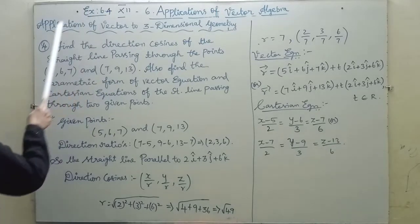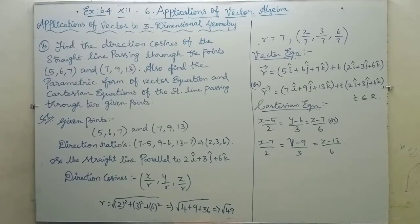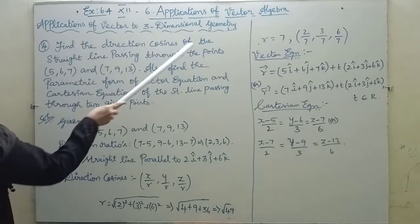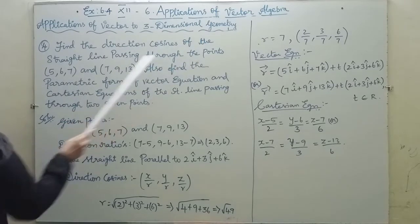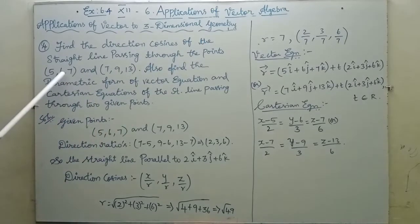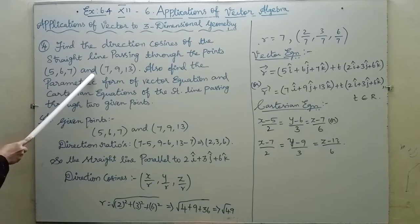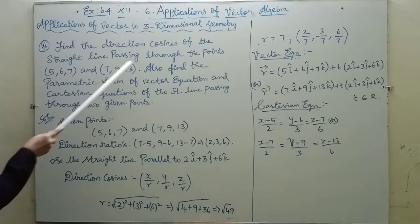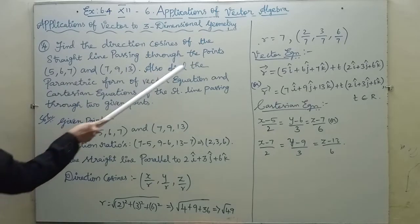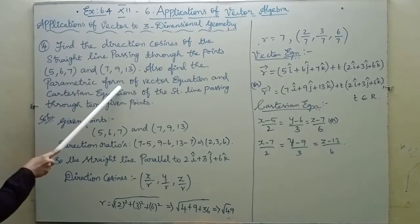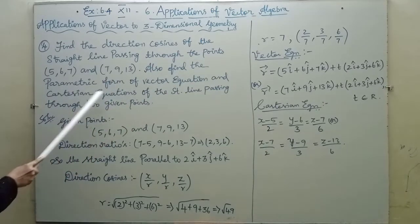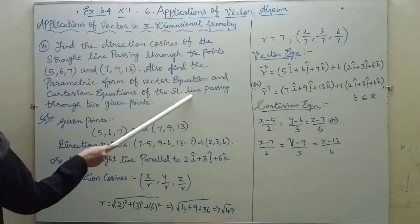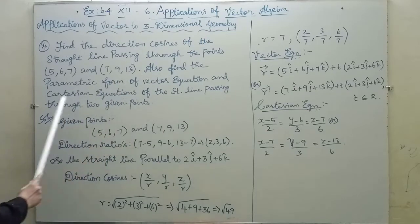Chapter 6, Exercise 6.4, problem number 4. Find the direction cosines of the straight line passing through the points (5, 6, 7) and (7, 9, 13). Also find the parametric form of vector equation and Cartesian equation of the straight line passing through the 2 given points.